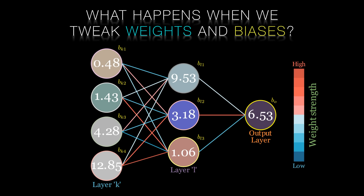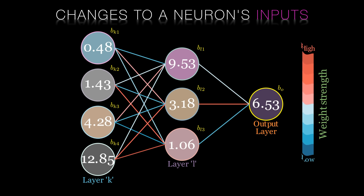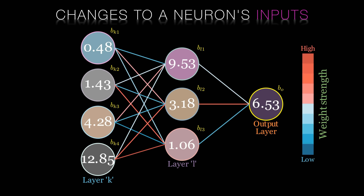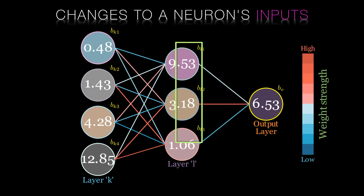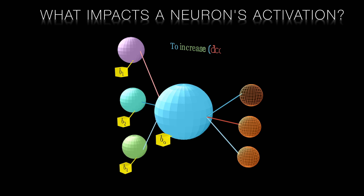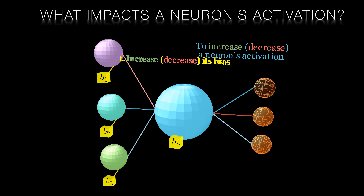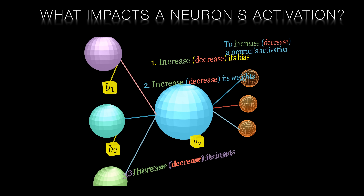The other factor that determines a neuron's activation is that neuron's inputs — the activations of the neurons in the previous layer. We can't directly change the activation of neurons in earlier layers, but we can influence these activations by altering the prior layers' weights and biases. Therefore, the three things that can alter any specific neuron's activation are: one, its bias; two, the neuron's weights; and three, the activations of the neurons in the prior layer.